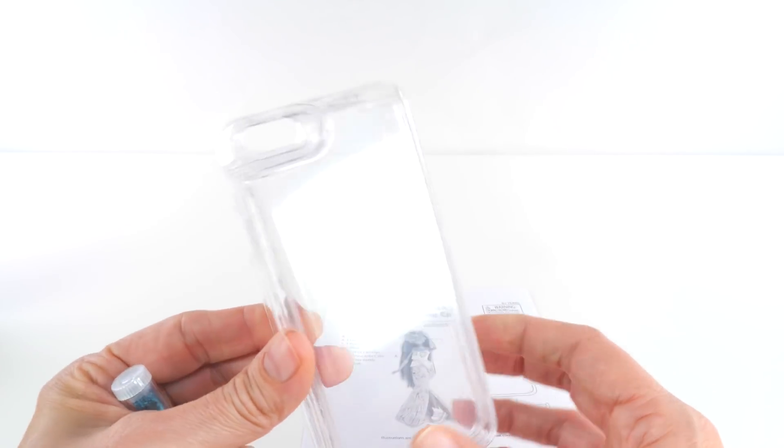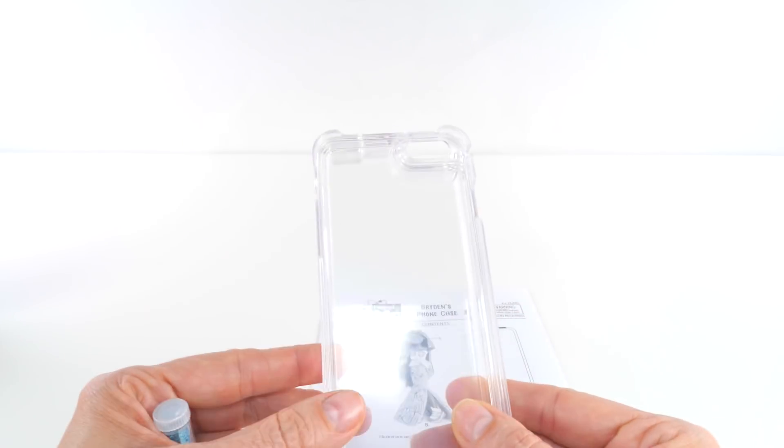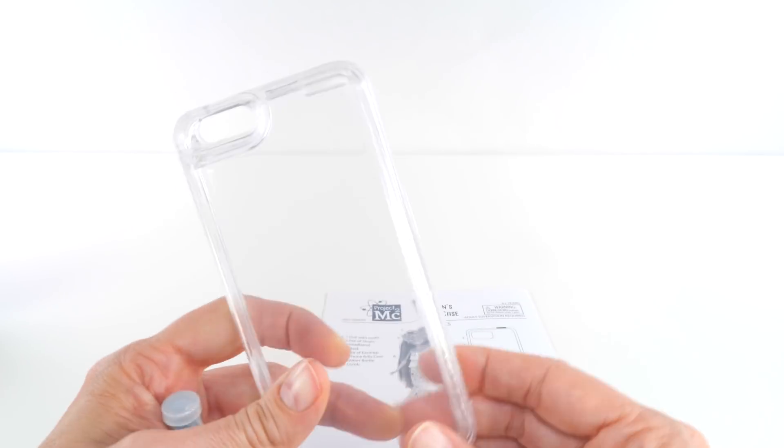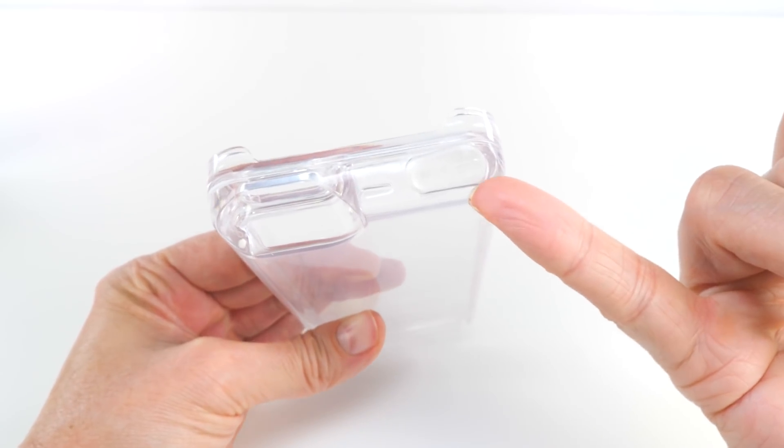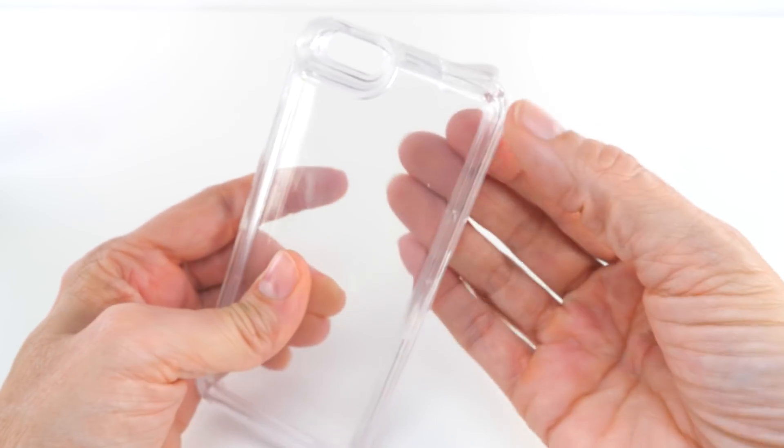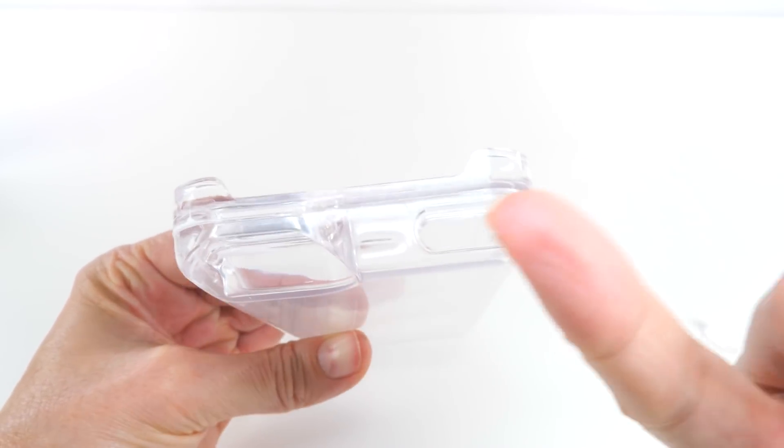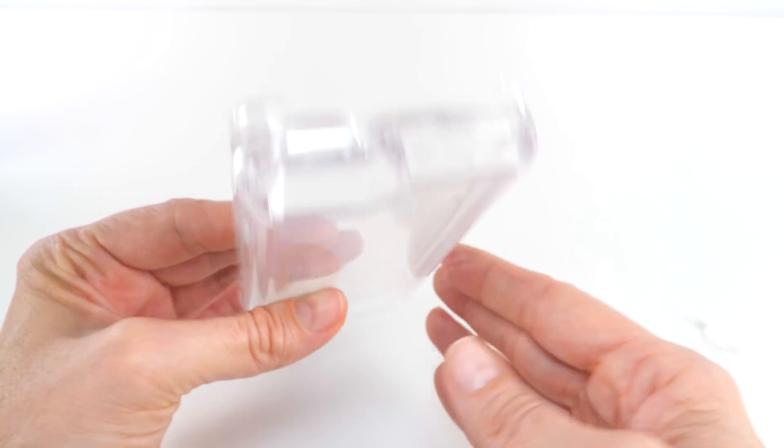So the science behind this project is the oil and water and how they do not mix. So let's get started and I'll show you. On the very top of the case is a little plug, we're going to remove that and set that aside. This is where we'll add the baby oil, a little bit of water, and the food coloring.